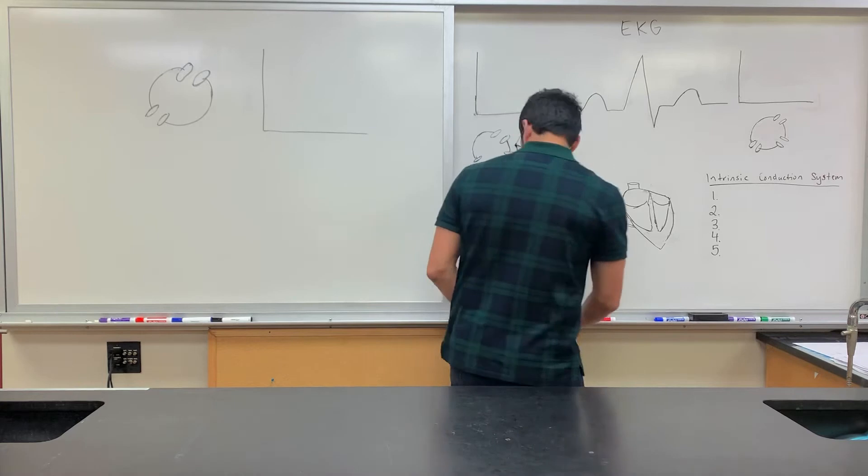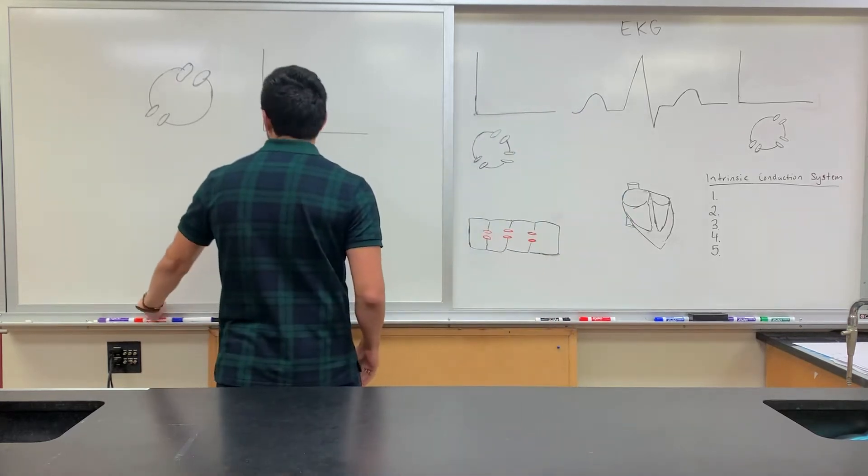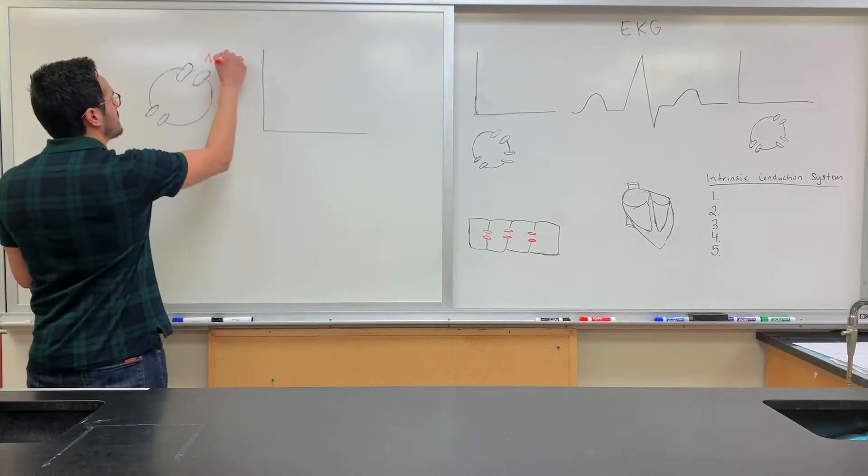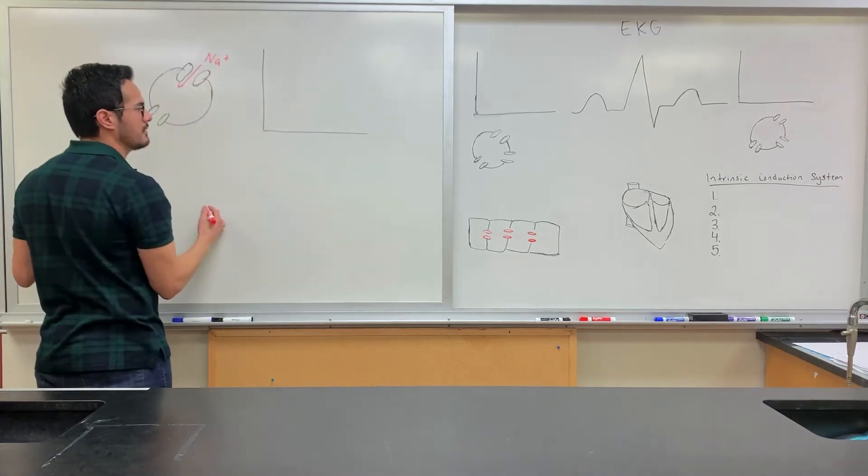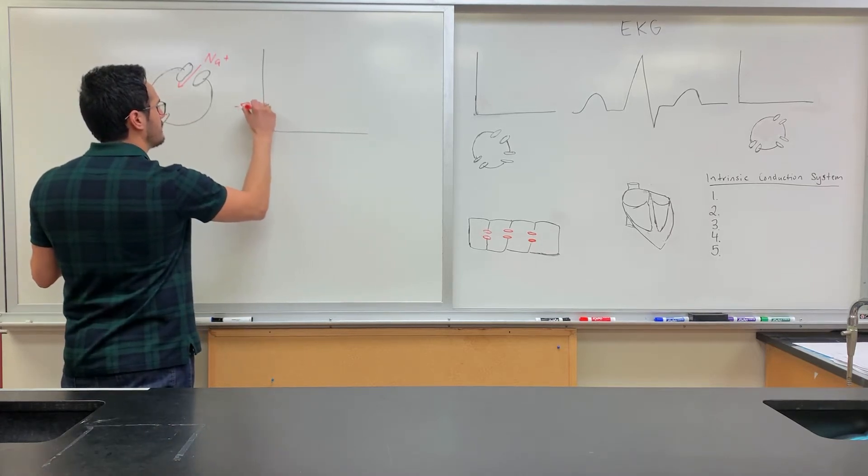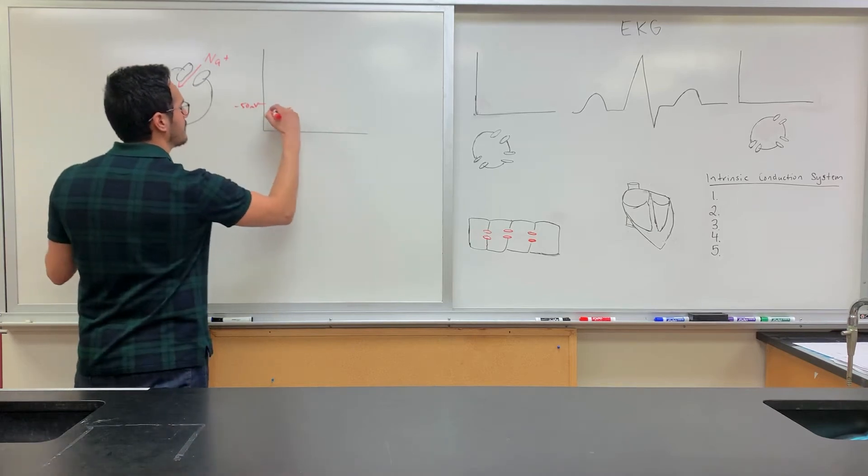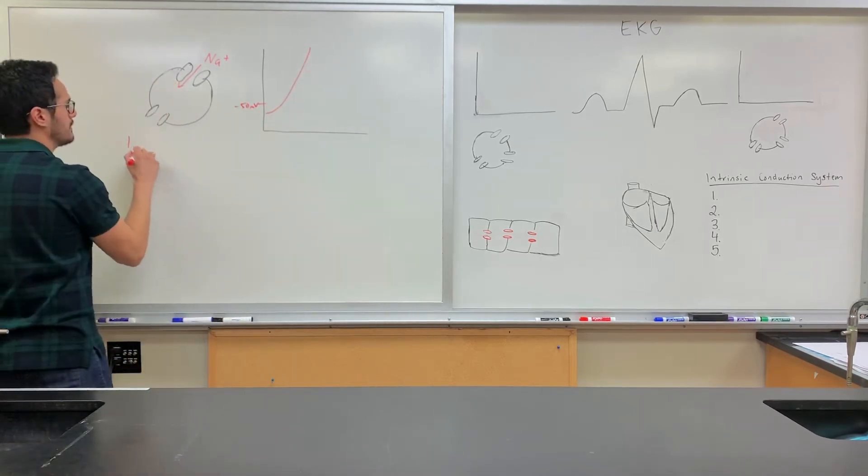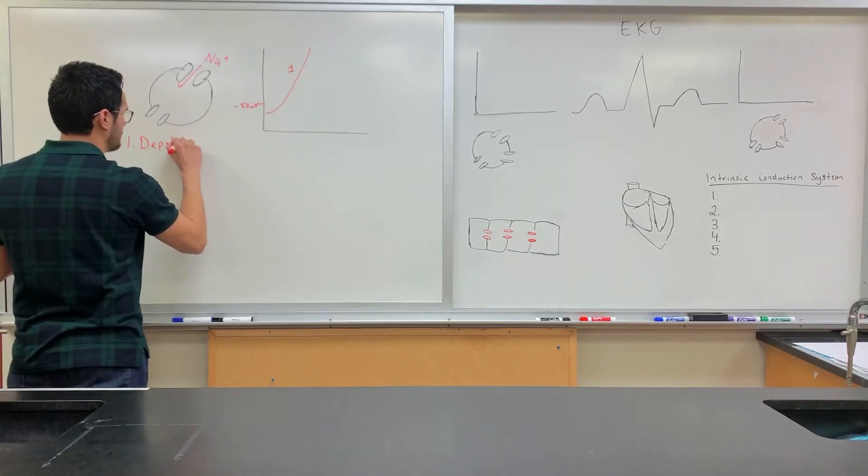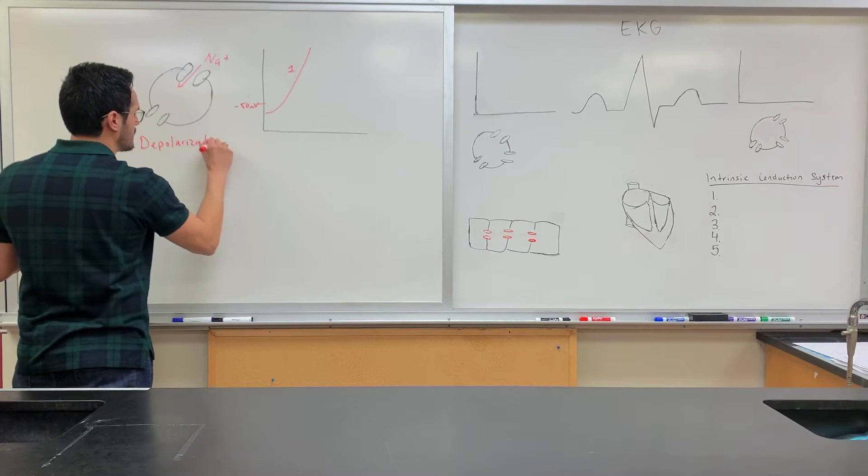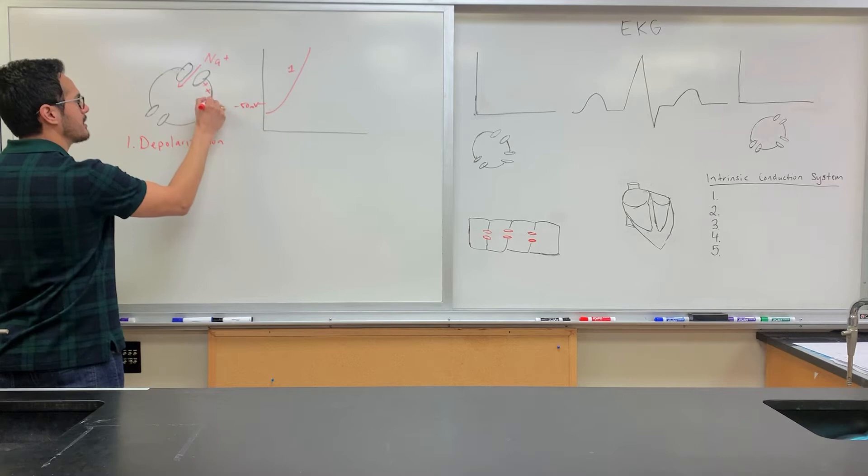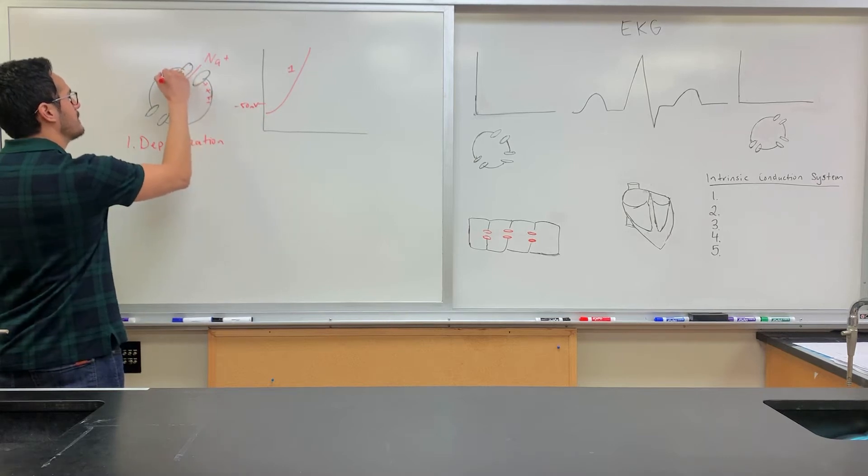Let's do a quick refresher of an action potential. Once again, sodium is positively charged and goes into the cell. As a result, when enough flows in, let's say threshold is negative 50, it'll go up. This event is depolarization, so membrane potential is becoming more positive.